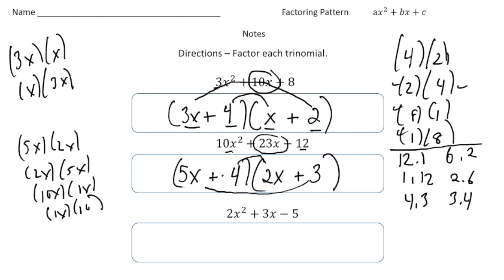These numbers have to be in this exact order, where you have 5x plus 4 on one factor, and then 2x plus 3 has to be the other factor. All right, let's do the last one.